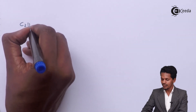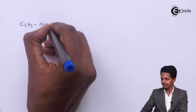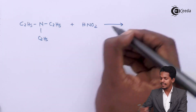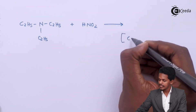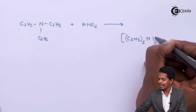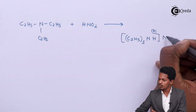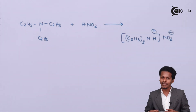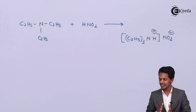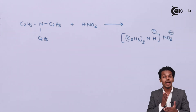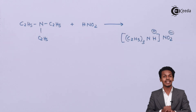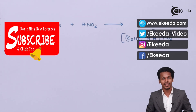For example, triethylamine (C2H5)3N reacts with HNO2 to give (C2H5)3NH+ NO2−, known as triethyl ammonium nitrite. This is a colorless solution. So there are different reactions of amines with nitrous acid depending on whether they are primary, secondary, or tertiary. Thank you friends for watching — I hope you can now differentiate primary, secondary, and tertiary amines by their reactions with nitrous acid.